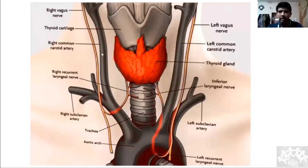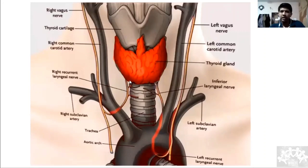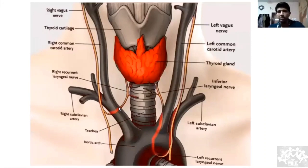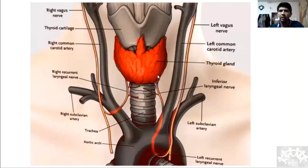The right recurrent laryngeal nerve loops around the brachiocephalic artery and runs in the tracheoesophageal groove, then reaches the thyroid. The left recurrent laryngeal nerve loops around the arch of the aorta, then runs in the tracheoesophageal groove and goes to supply the thyroid gland.